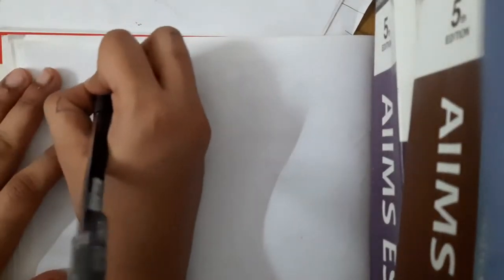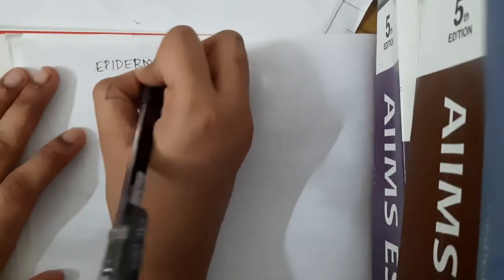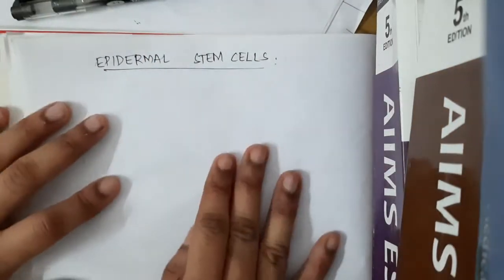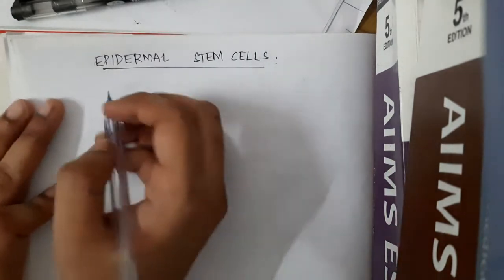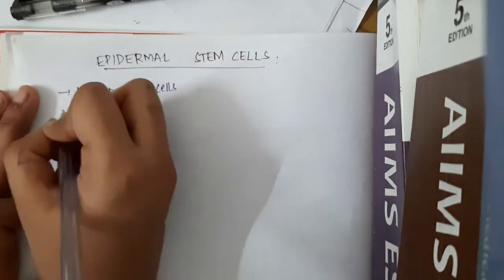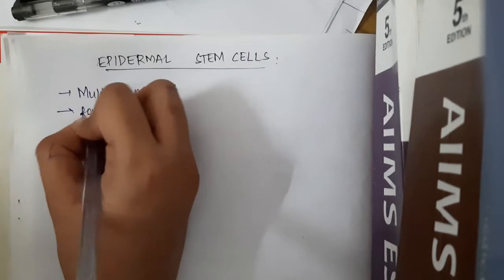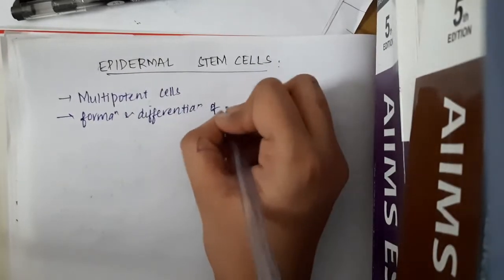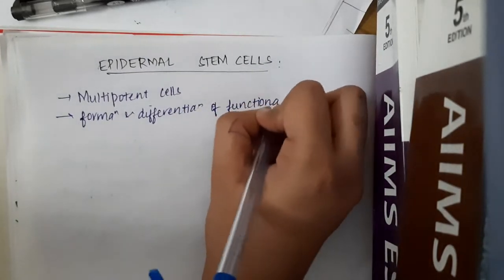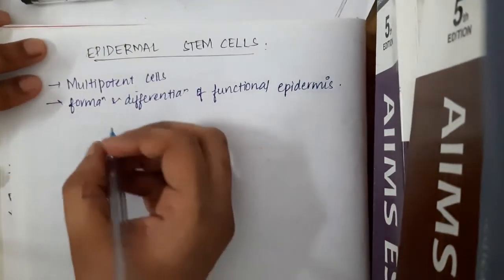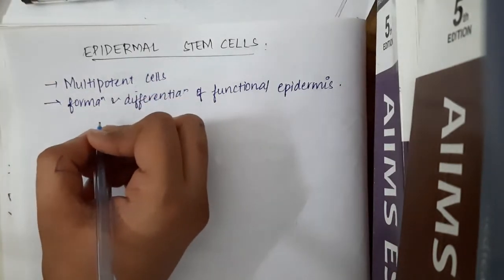Hello friends, welcome to a new lecture. Today's lecture is on epidermal stem cells. These are multipotent cells that help in formation and differentiation of functional epidermis — that is, all the keratinocytes. Their transformation from stratum basal to stratum corneum occurs with these cells.